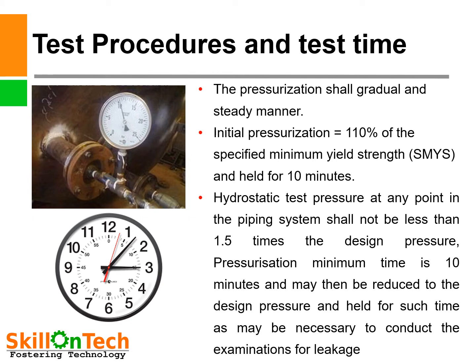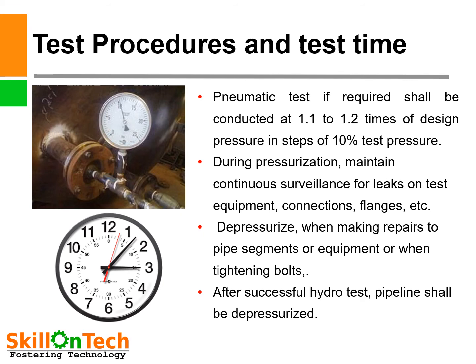After bringing down the test pressure to design pressure, we have to carry out a survey of the entire pipeline and check for joint tightness and leakages if any observed in the piping system. Pneumatic test if required shall be conducted at 1.1 to 1.2 times the design pressure in steps of 10% test pressure. During pressurization, maintain continuous surveillance for leaks on test equipment, connections, and flanges.